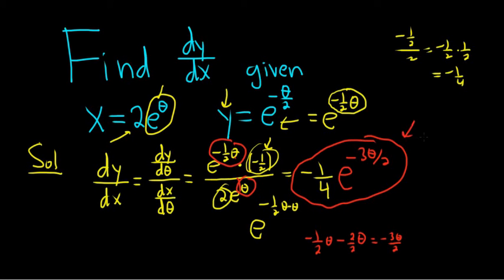And that would be dy/dx. This is the slope. This is the slope of the parametric equations at theta. Theta is called the parameter. That's it.